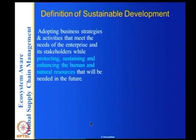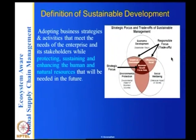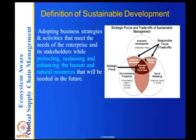The definition of sustainable development for an enterprise is adopting business strategies and activities that meet the needs of the enterprise and its stakeholders while protecting, sustaining, and enhancing the human and natural resources needed in the future. The triple bottom line has three strategic focuses: environmental protection, social well-being, and economic development. Where all three circles meet is the maximum benefit focus area — the area where the triple bottom line is fully met.